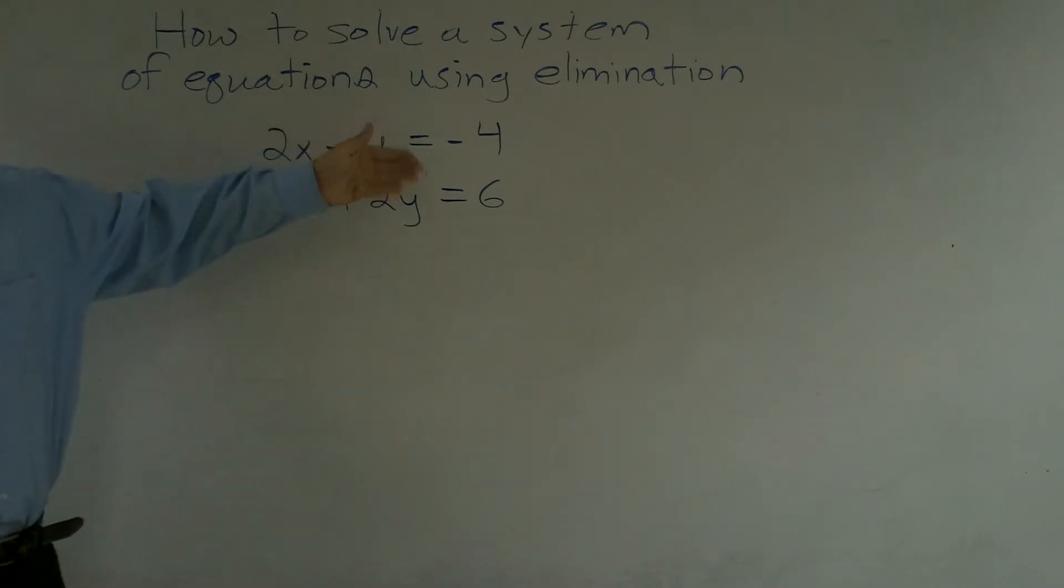However, if I multiply by 2, I can go ahead and get rid of the x. If I multiply by 2 on this x, then what will happen is I'd get a 4x, and 4x plus a negative 4x would give me 0x.